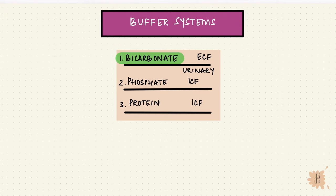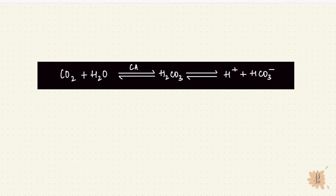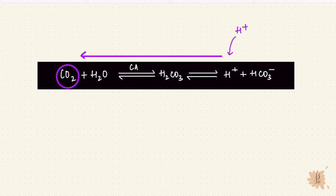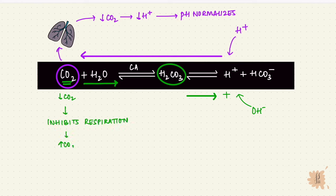For the bicarb buffer system, the base is bicarbonate and the acid is carbonic acid or carbon dioxide. Carbon dioxide combines with water and by carbonic anhydrase forms carbonic acid, which dissociates into a hydrogen ion and a bicarb ion. These reactions are reversible. If more hydrogen ions are added, the reaction shifts left, producing more carbon dioxide, which is eliminated by the lungs. The lowering of carbon dioxide reduces hydrogen ions and the pH normalizes. If a base is added, it binds to the hydrogen ion, so more carbonic acid dissociates and is consumed, increasing consumption of carbon dioxide. The lowering of carbon dioxide inhibits the respiratory centers, which then increases carbon dioxide levels, increasing hydrogen ions and normalizing pH. Depending on whether hydrogen ions are needed or not, the reaction shifts left or right.